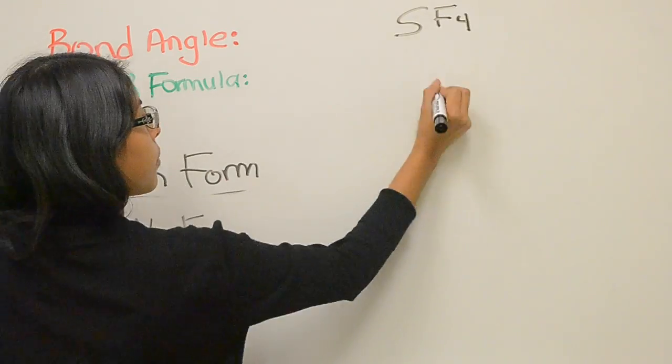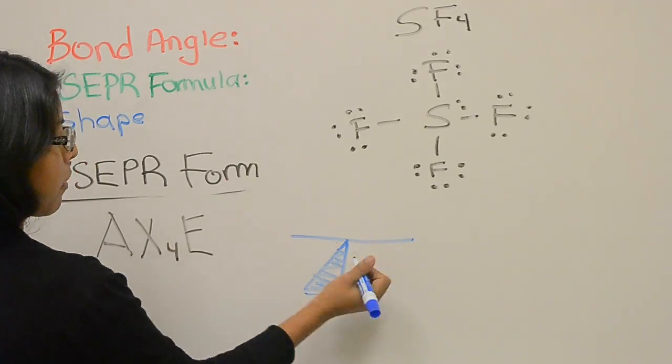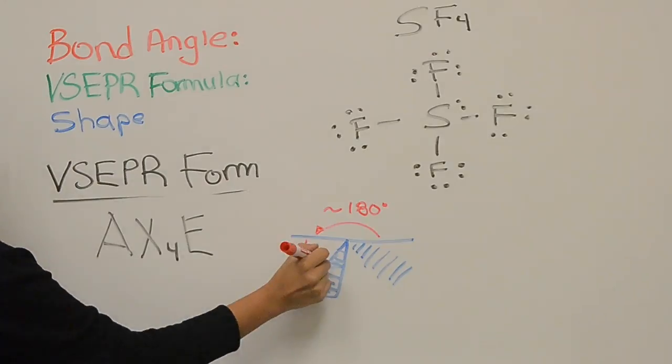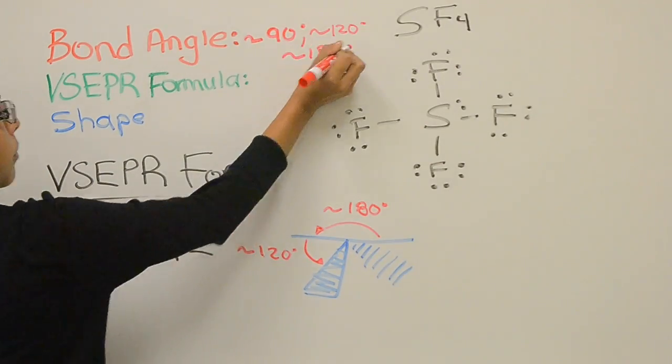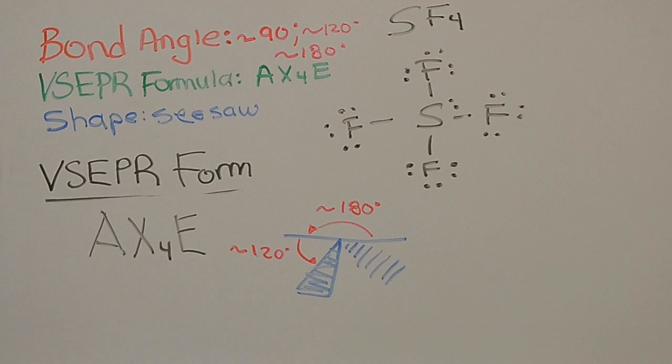Sulfur tetrafluoride has a VSEPR formula of AX4E with the bonding of approximately 90 degrees, 120, and 180 degrees. Due to the lone pairs pushing on the fluorine atoms, creating the shape of a seesaw.